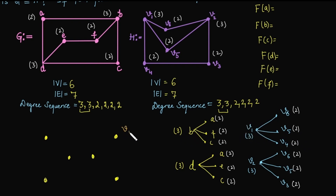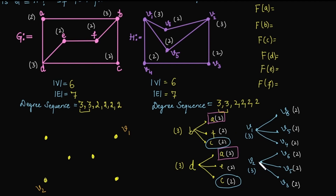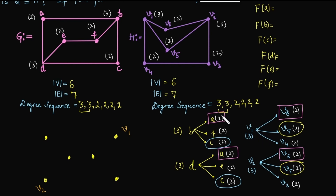We map vertex B with V1, and vertex D with V2, since there is no other vertex of degree three. Now, vertices B and D have two common adjacent vertices: A and C. Similarly in graph H, V1 and V2 have two common adjacent vertices: V6 and V5. So we have two choices — A can be mapped with V6 and C with V5, or A mapped with V5 and C with V6.